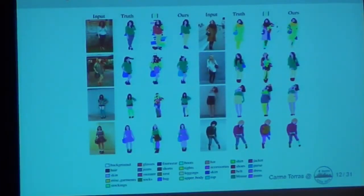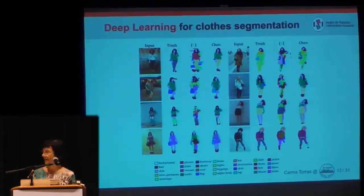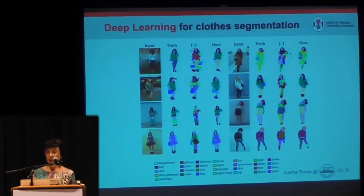We have not only used handcrafted descriptors as I mentioned in the pipeline, but we are now also using deep learning descriptors, which are very fashionable nowadays, in order to segment clothes worn by people. For this, of course, we need a large image database of people dressed.